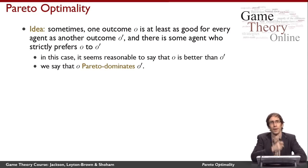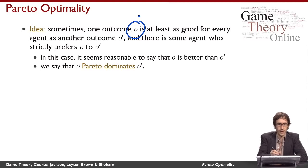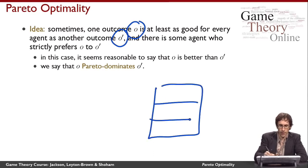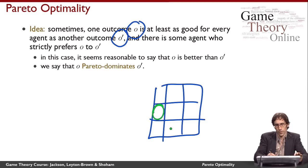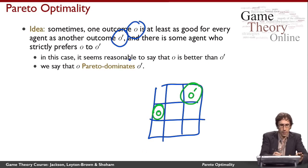Well, here's a way we can make this work. We can't do it all the time, but sometimes there's an outcome O that is at least as good for everybody as some other outcome O prime. Remember, an outcome is like a cell of the matrix game. So there's some outcome O which is at least as good for everybody as some other outcome O prime, and furthermore there's some agent who strictly prefers O to O prime.